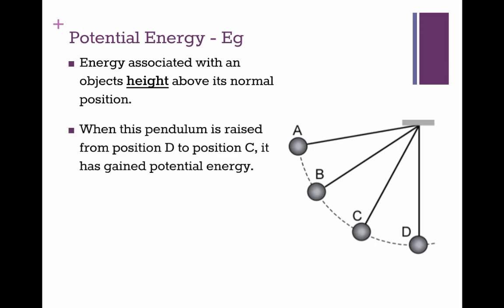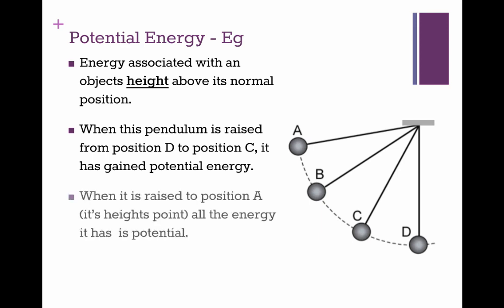So when the pendulum is raised from position D, which is straight down, to position C, it has gained potential energy, because I did work on it. When it's raised all the way up to position A, its highest point, all of the energy it has is potential energy.